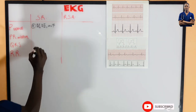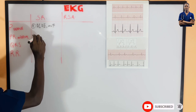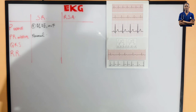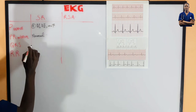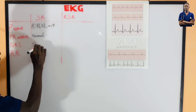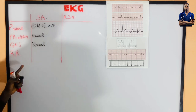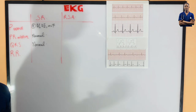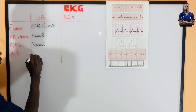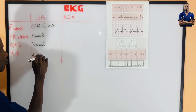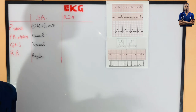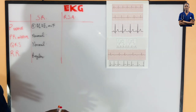The PR interval must also be normal. You already know what a normal PR interval is. The QRS complex must also be normal, and the RR interval — the distance between two QRS complexes — must be regular, meaning equidistant between each RR interval.